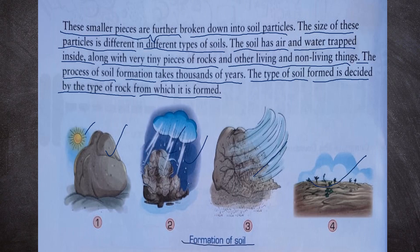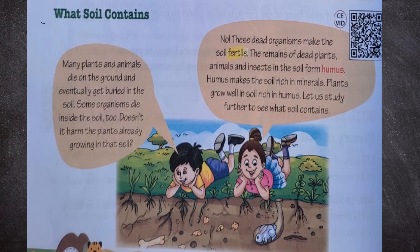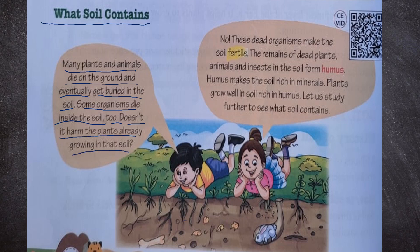Plants and animals die on the ground and eventually get buried in the soil. Some organisms die inside the soil too. Does this harm the plants? No — these dead organisms make the soil fertile. The remains of dead plants, animals, and insects in the soil form humus. Humus makes the soil rich in minerals, and plants grow well in soil rich in humus.